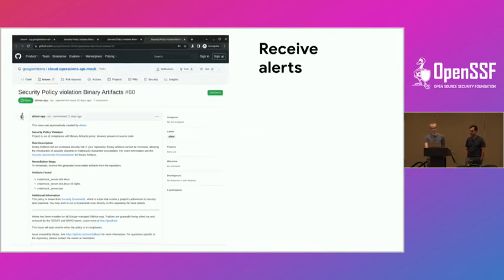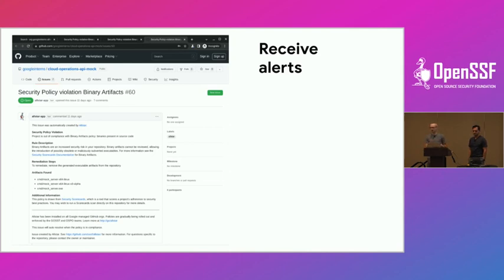Regarding the alerts — you can configure AllStar so that either the organization owner is the gatekeeper and can allow things to be turned on, off, or accepted, or the organization owner can allow the individual repo to opt itself out by setting a file in its own repo. It's flexible based on how the person installing AllStar on the org decides what they want to allow or disallow.